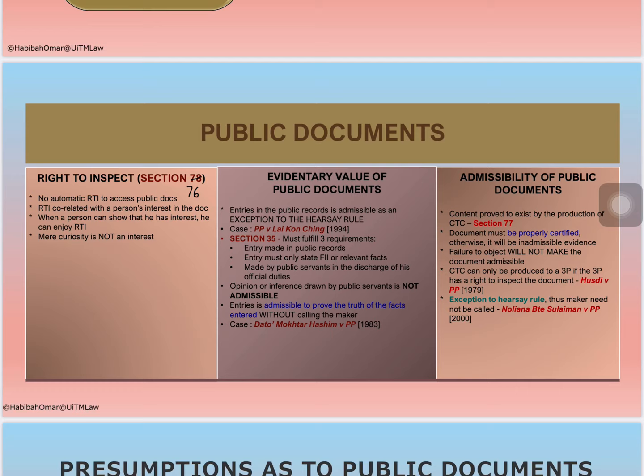A document may remain a public document even if you have no right to access it. The right to inspect must correlate to the person's interest in the document — it has to be beyond mere curiosity. It must be some kind of recognized right you have to that document. Under section 76, there is no right to a certified true copy of a document unless you have a right to inspect it.